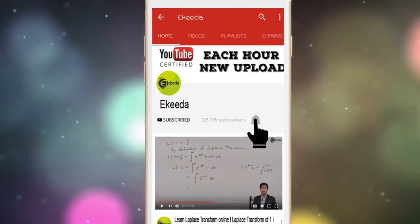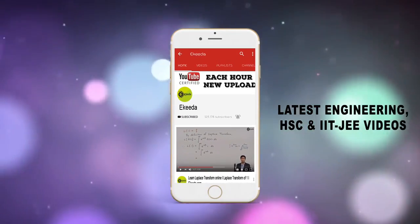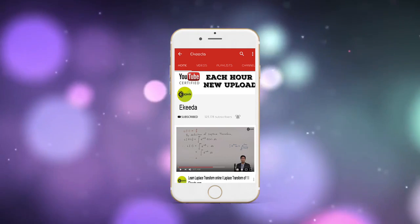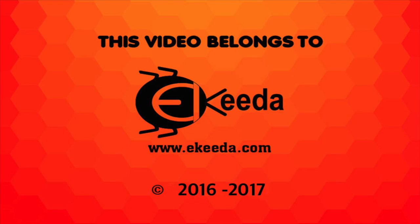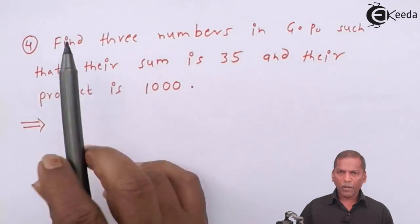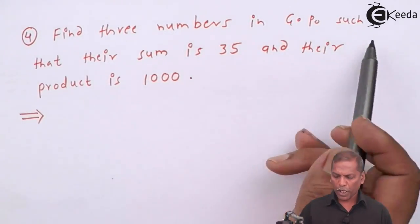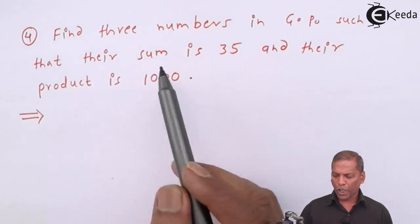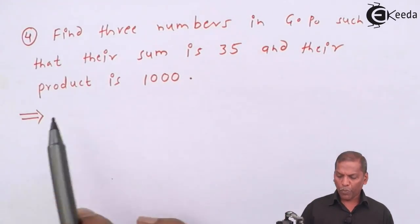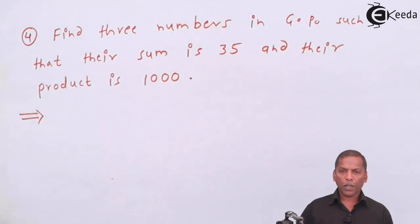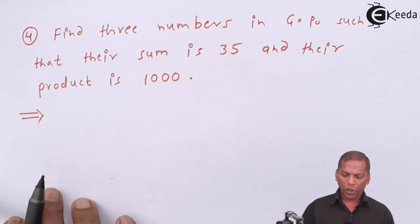Do subscribe to Ikeda channel and press the bell icon to get updates about the latest engineering, HSE, and IIT JEE Mains and Advanced videos. Find 3 numbers in GP such that their sum is 35 and their product is 1000. Now let's see the solution.